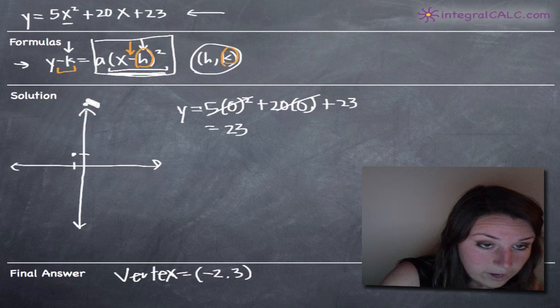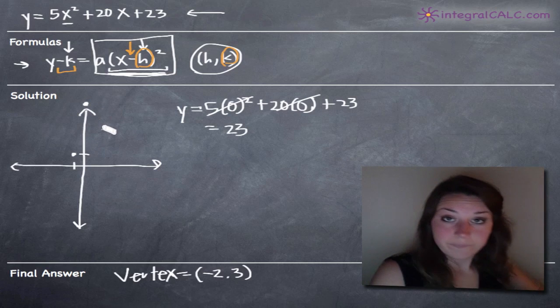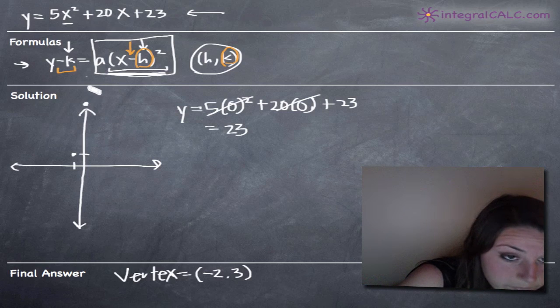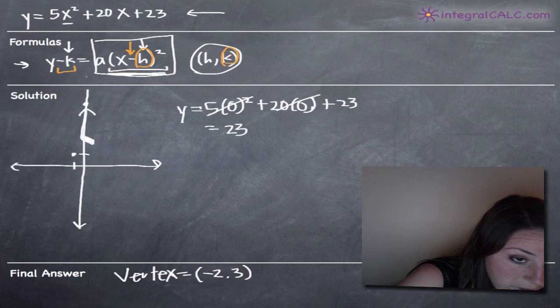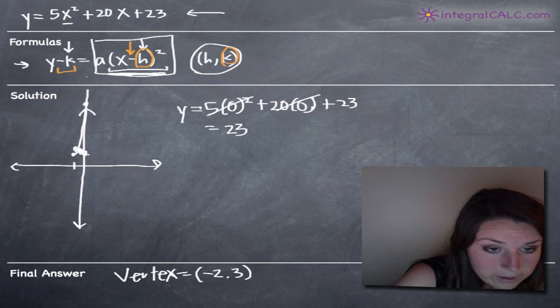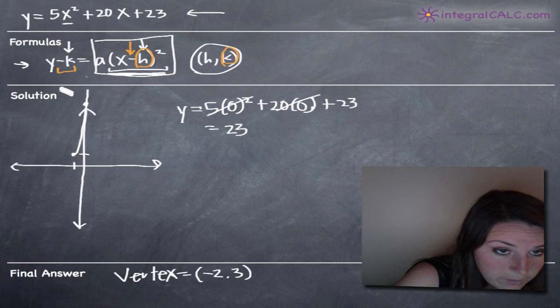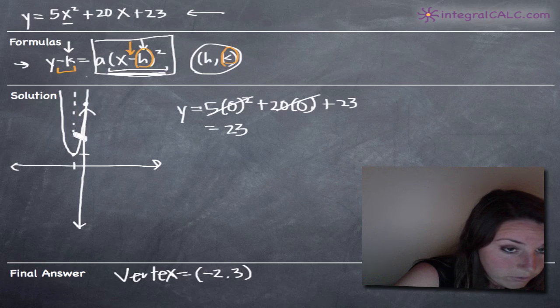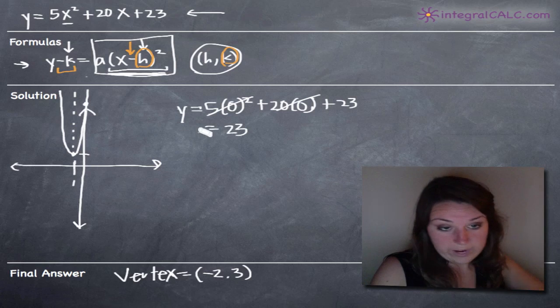So the y-intercept is at 0, 23. Let's say that's right up here. So this is a very steep, narrow parabola but if we can sketch roughly the parabola, it should look about like this. So we know the y-intercept, we know the vertex. Now we can just make this about symmetric. Once we know the y-intercept and the vertex, we've got this imaginary line here through the vertex and I just made the left side symmetrical to the right side.